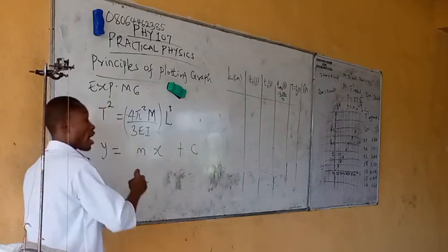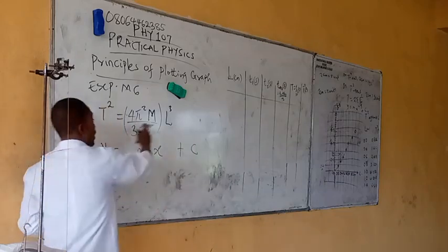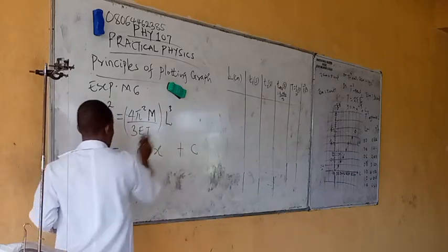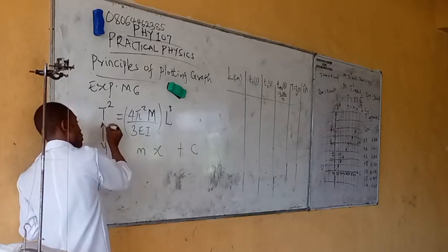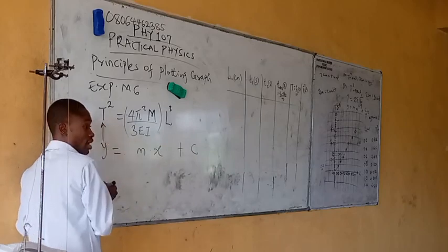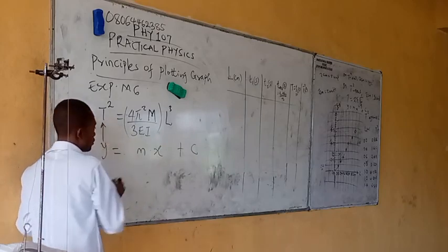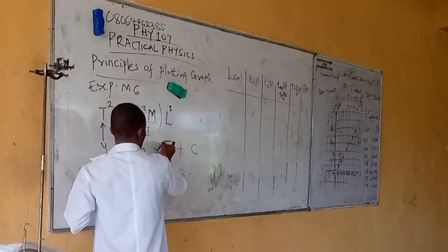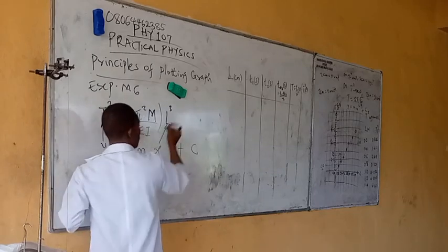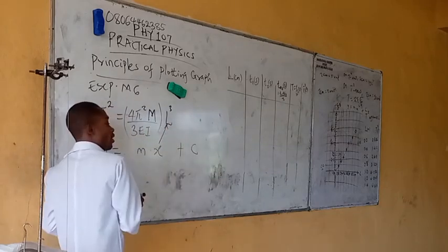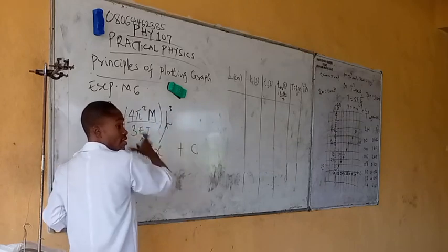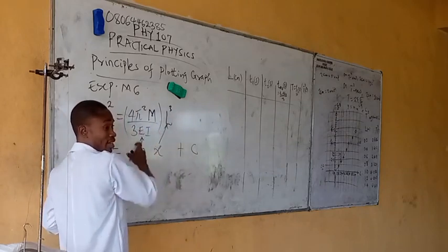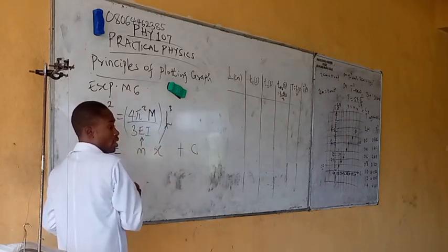Now from the graph, plotting t squared against LQ: y would be t squared, x would be LQ, and m would be the grouped constant in the bracket. All these things — there are plenty of things inside that bracket.